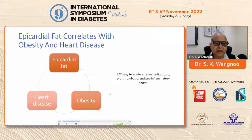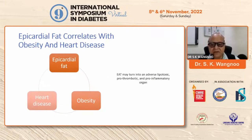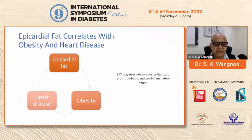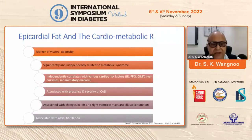If you correlate epicardial fat with obesity and heart disease, the epicardial adipose tissue may turn into an adverse lipotoxic, pro-thrombotic, and pro-inflammatory organ, which causes a vicious cycle between obesity, heart disease, and the involvement of the epicardial fat.